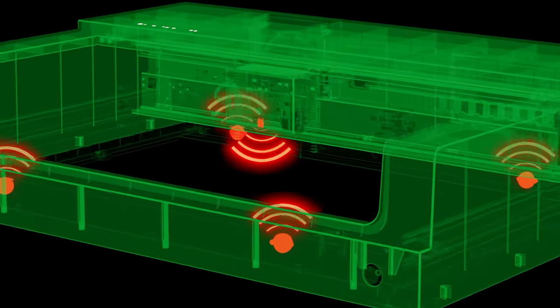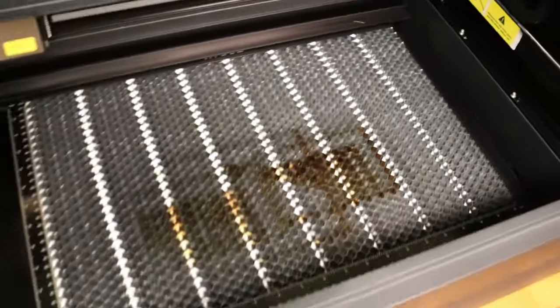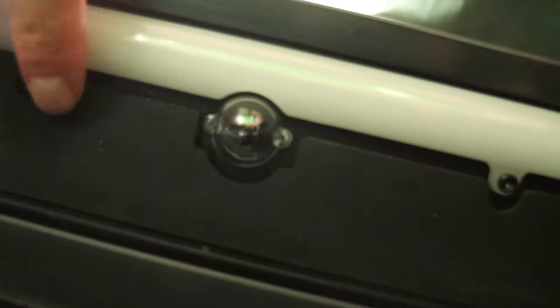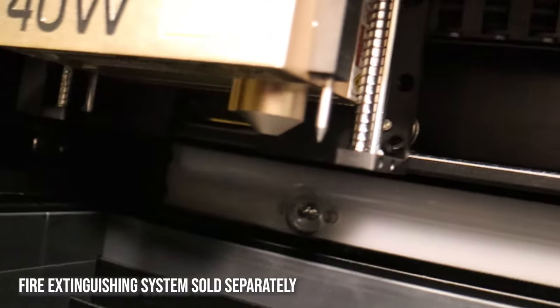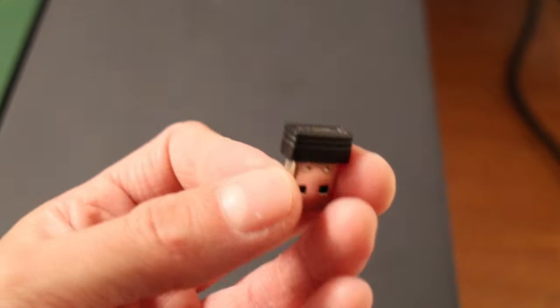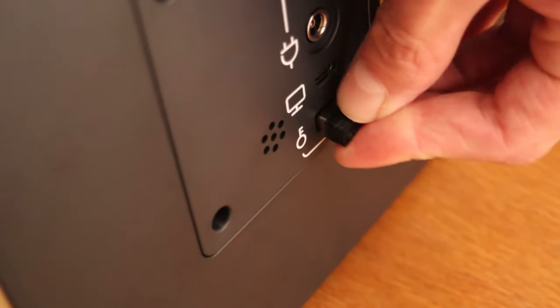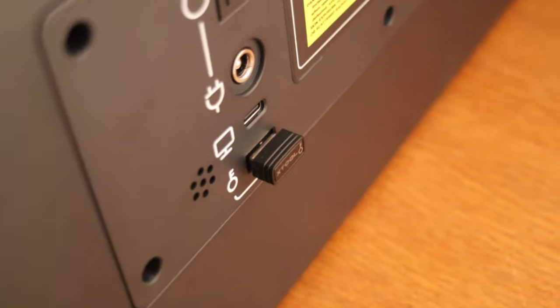The X-Tool S1 also boasts a five-direction flame detection system, which further reinforces its safety measures. This advanced system is designed to quickly identify any unusual conditions or hazards, such as the presence of flames, and automatically shuts down the laser operation or trigger the fire extinguishing system. The machine only works if this safety key is inserted. This is a great feature for preventing kids and unauthorized people from using the machine.